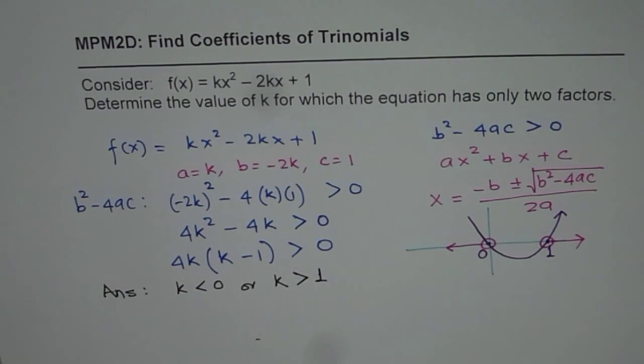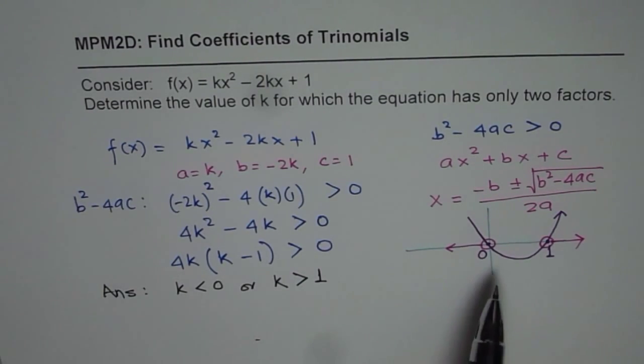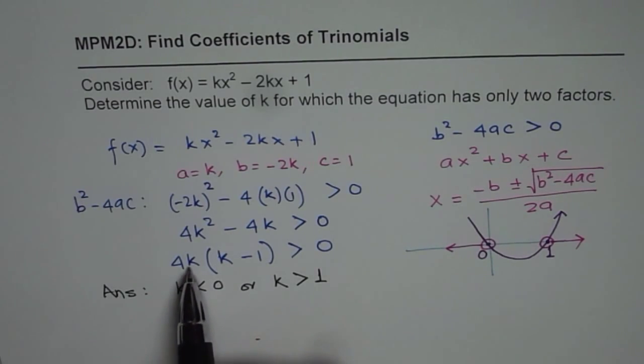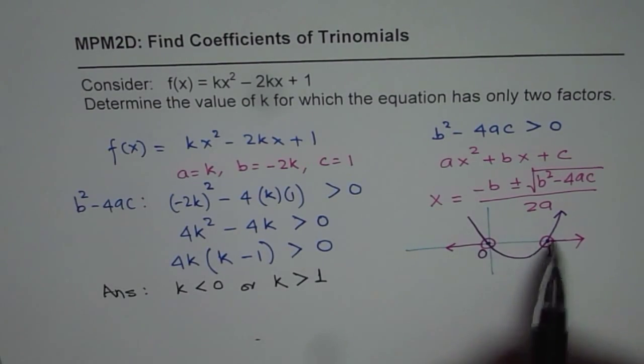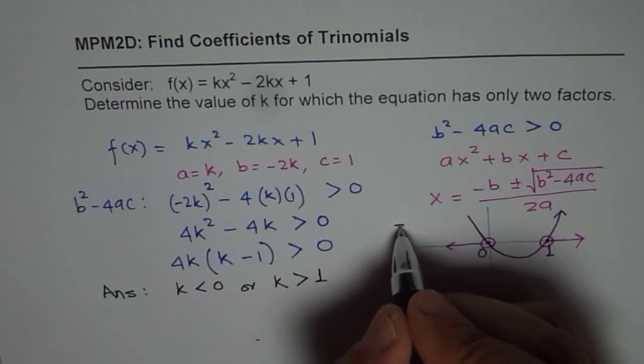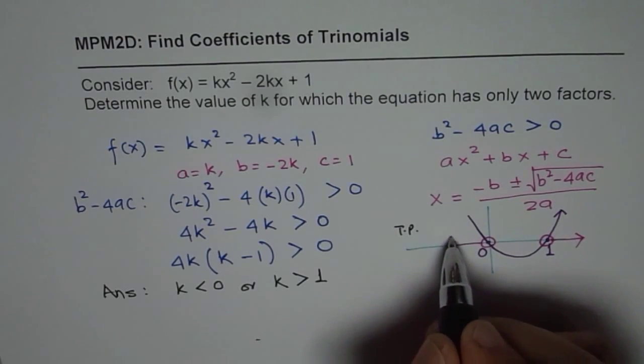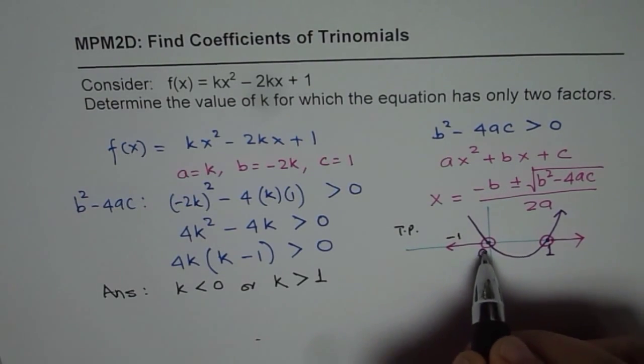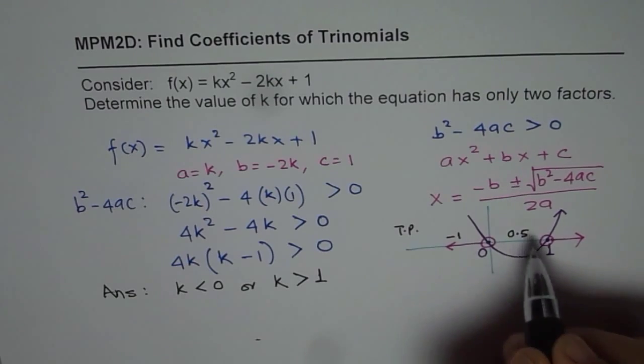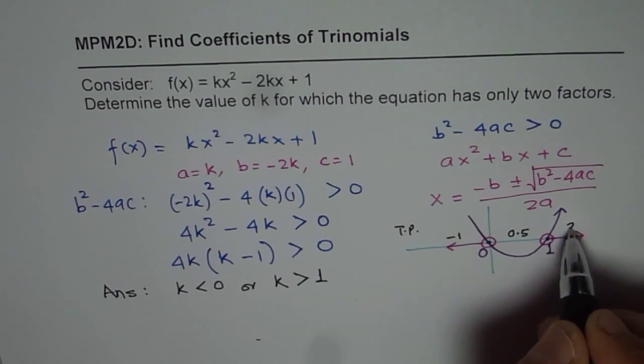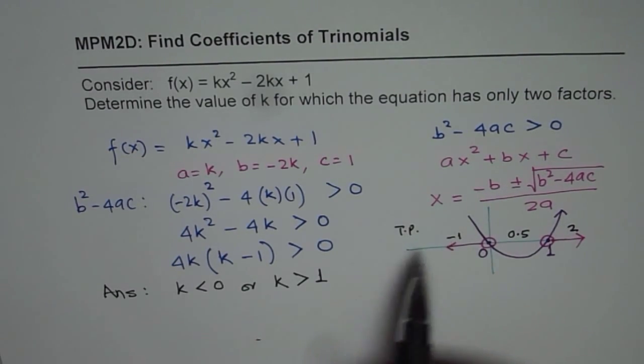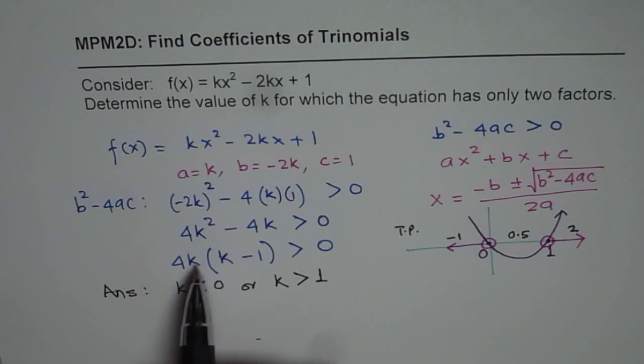So that is how we can do it using graph. You can also do it using test values. That is for k equals 0 and k equals 1 you get 0s. Now you can have test points. Take a point on left side of 0. Let it be minus 1. In between 0 and 1 let us say 0.5 and greater than 1 as 2. Now if I write minus 1 here I get negative and negative which will give me positive which is greater than 0. So that helps. That is a part of solution.